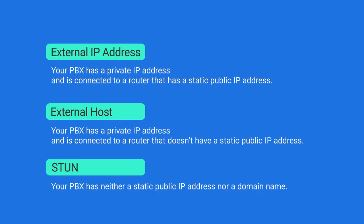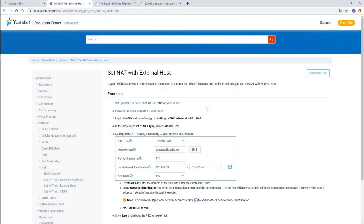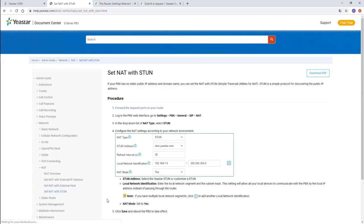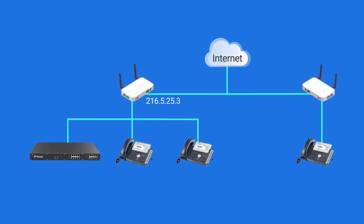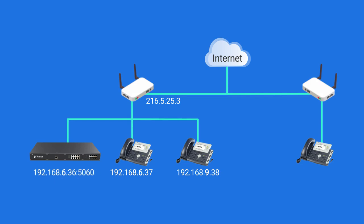We should select one type to configure NAT according to our network environment. In this video, I'll show how to configure the External IP Address type. For the other two types, please check our document center. As an example scenario: the router has a static public IP from the local carrier; all devices connect to the same router; the PBX and one SIP phone are in the same network segment while another phone is in a different segment. The default SIP port 5060 is forwarded to port 5566 of the public IP, and a remote SIP phone in another private network is registered to the PBX via the internet.